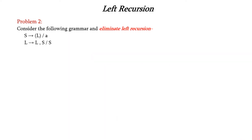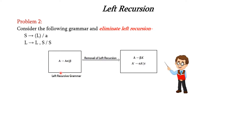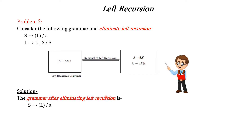Let us consider one more problem. Here we have two productions. The first production does not have left recursion. The second one has left recursion in L, so we have to remove it. Let us use the general formula for reference. We take the first production as it is.